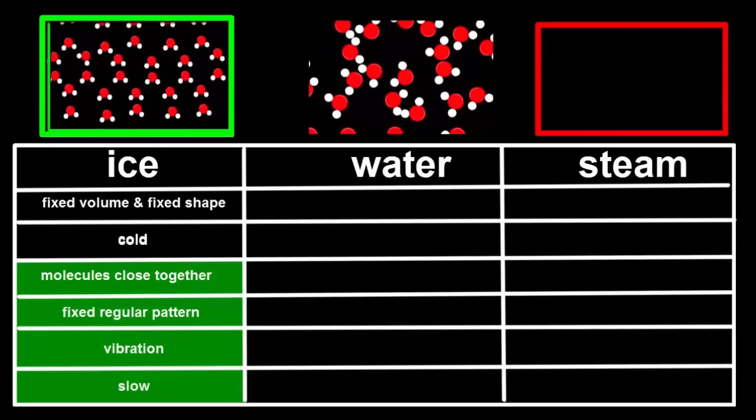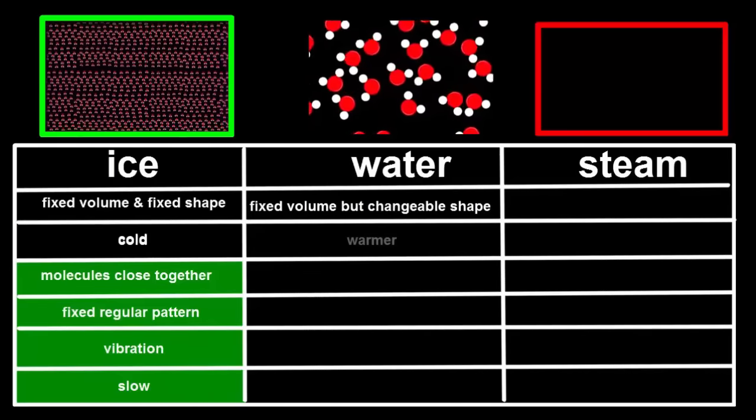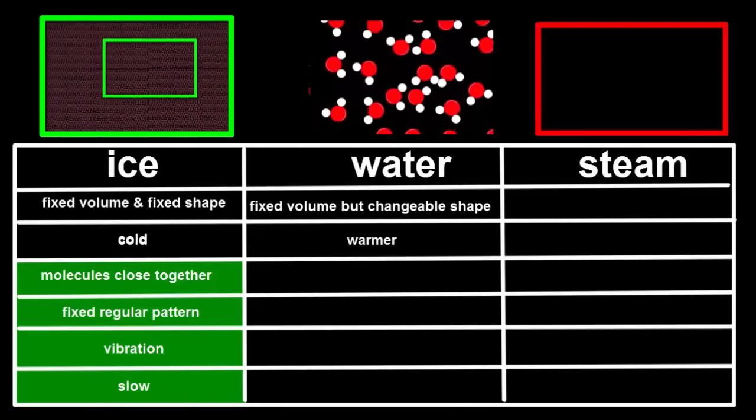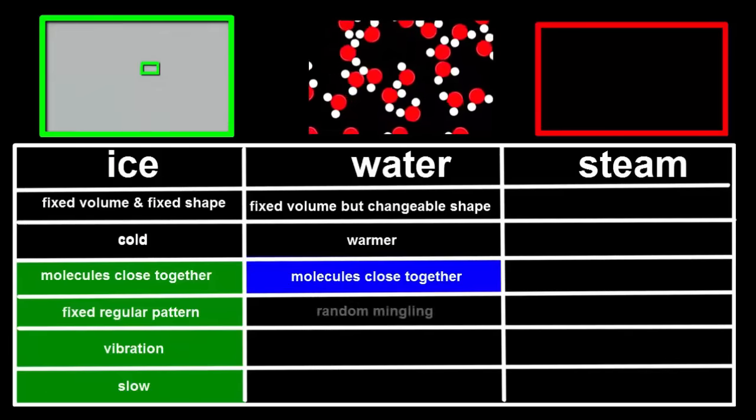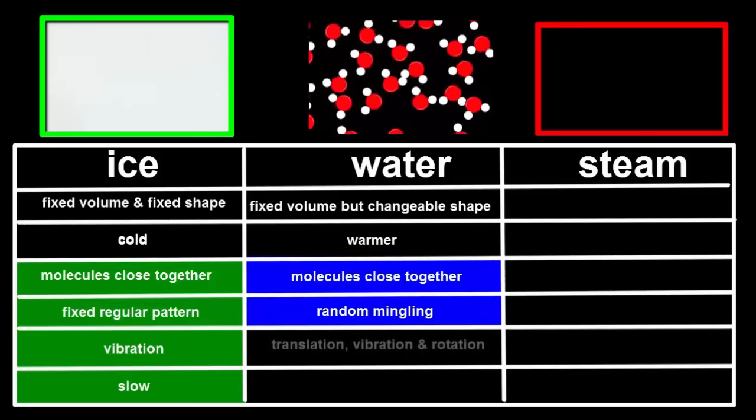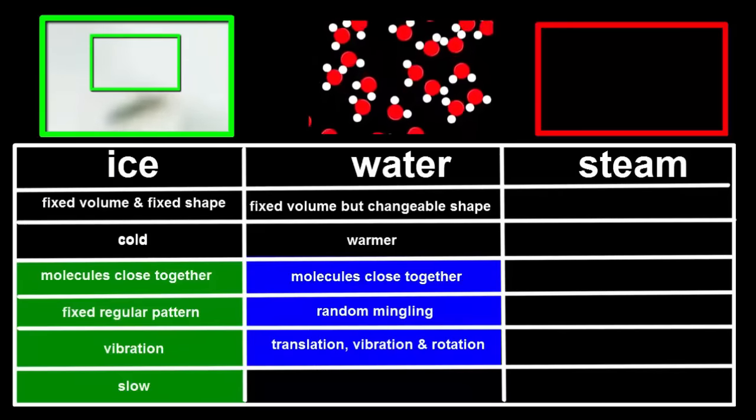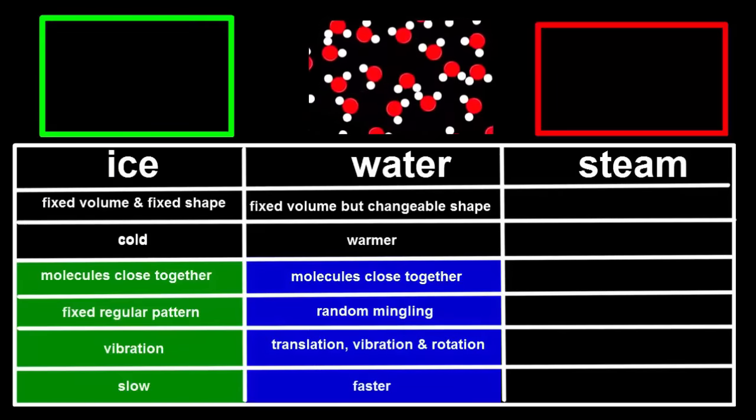We can see that liquids have a fixed volume but a changeable shape. If we could see their molecules, they'd be close together, randomly mixing with each other, translating, rotating and vibrating, and moving faster than in solids.